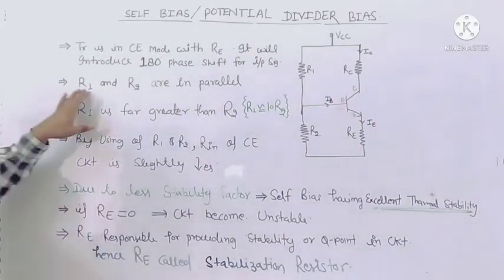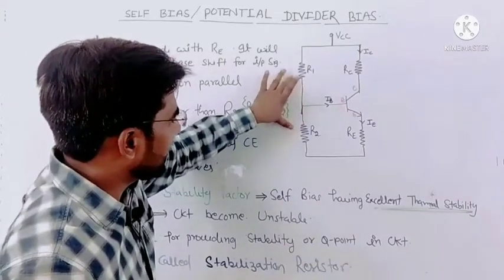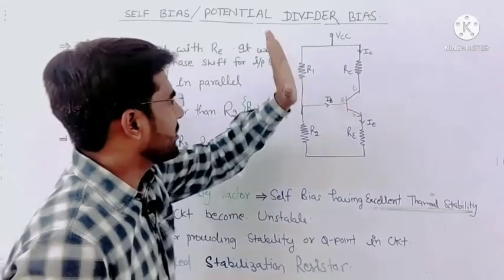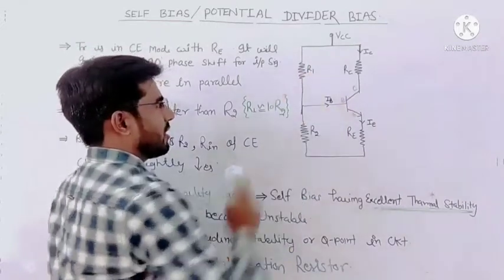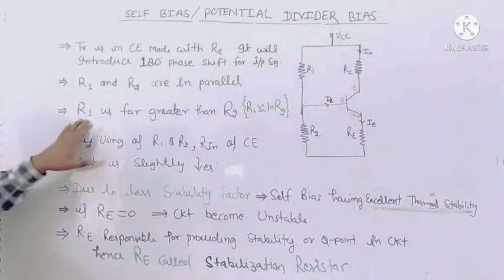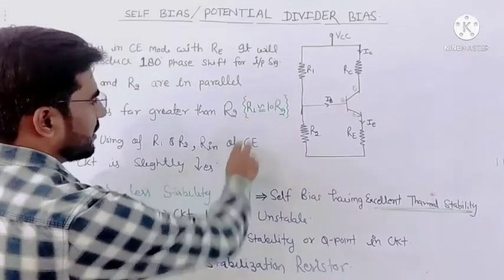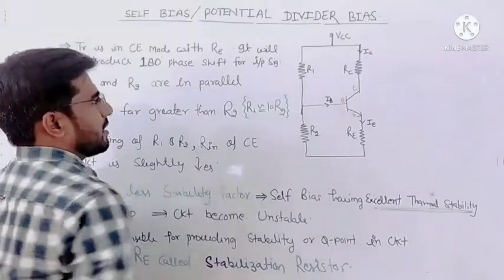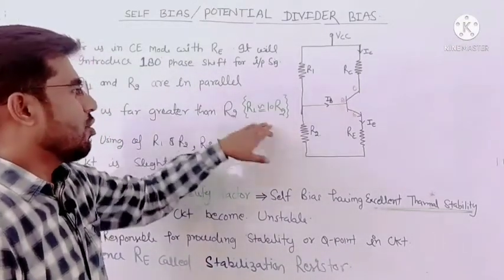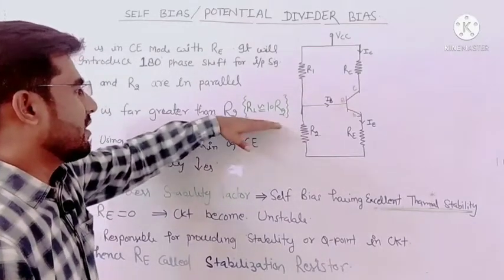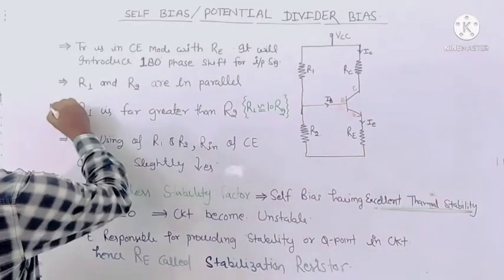Second point: R1 and R2 are in parallel. When we break this circuit, you can easily analyze how R1 and R2 are parallel. Third point: R1 is far greater than R2 — this is very important from an objective point of view. R1 is approximately 10 times R2. This is a very important point to remember.